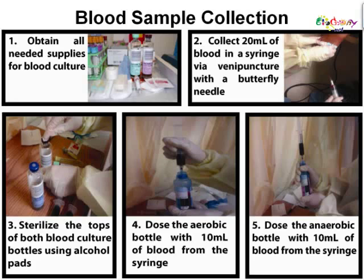Please note that while the collection protocol calls for performing venipuncture whenever possible, depending on the patient, it may not always be the best method. For example, in severely burned patients, venipuncture is not recommended due to the lack of innate barrier to infection and possible contamination. In this case, blood is drawn from a line, frequently an arterial line. The issue here is contamination. The growth of certain species of gram-positive bacteria, frequently the common skin contaminant Staphylococcus epidermidis, a coagulase-negative staphylococci, often reflects contamination or arterial line colonization, whereas the growth of gram-negative bacteria may be indicative of bacteremia.